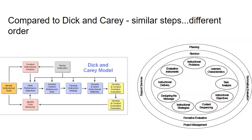One model that is compared very well with the Kemp model is the Dick and Carey model. The parts of these models are very similar — you'll notice that similarity comparing the ovals of the Kemp model versus the boxes of the Dick and Carey method. The major difference is that Dick and Carey wants everything to go in a certain order, whereas Kemp is a free-for-all — you start wherever you want. The ordering of how you do things is different versus a more rigid start-here, finish-here model. Kemp is more free-flowing and flexible.